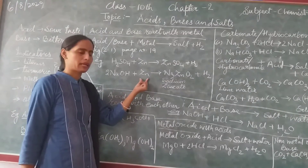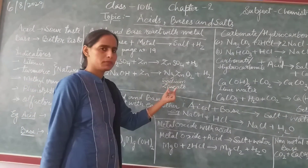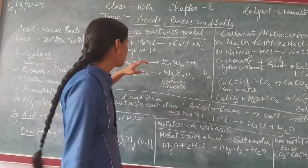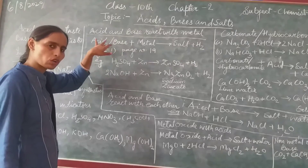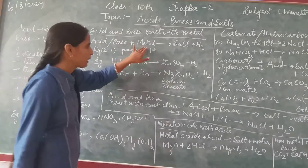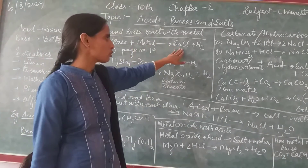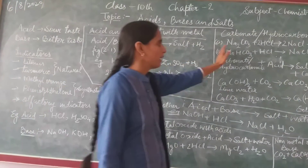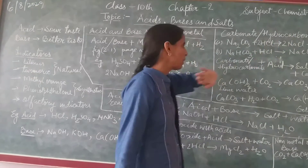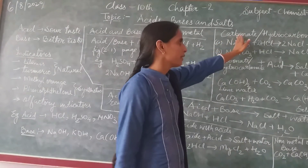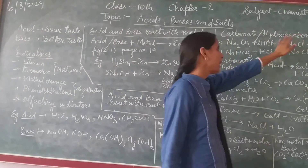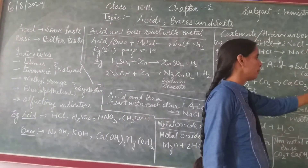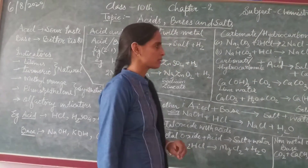Sodium hydroxide reacts with zinc — sodium zincate and water, plus hydrogen gas, are produced. Acid plus base gives salt. Metal carbonate and hydrocarbonate: when metal carbonate or hydrocarbonate reacts with acid, we get salt plus water plus carbon dioxide gas.